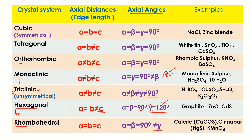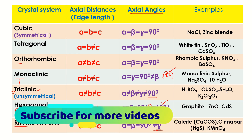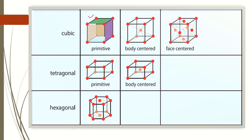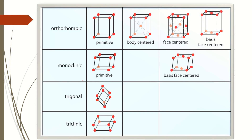Now let's discuss the 14 Bravais lattices — the primitive and non-primitive cells of the seven crystal systems. Cubic has one primitive and two non-primitive cells (body-centered and face-centered). Tetragonal has one primitive and one body-centered. Hexagonal has one primitive. Orthorhombic has one primitive and three non-primitive (body-centered, face-centered, and base-centered). Monoclinic has one primitive and one non-primitive. Trigonal/rhombohedral has one primitive. Triclinic has one primitive. That gives a total of 14 Bravais lattices across the seven crystal systems.